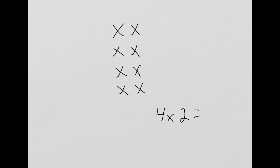4 groups of 2 is 4 times 2. And we see by counting by 2s, 2, 4, 6, 8, that 4 times 2 equals 8.